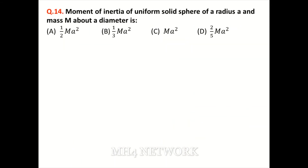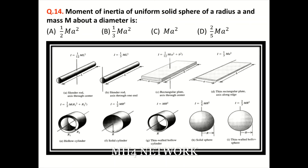Moment of inertia of a uniform solid sphere of radius A and mass M about a diameter — yeh numerical solve bhi kar sakte hain, lekin behtar hai yeh table yaad kar lein kyunki PPSC papers mein kisi bhi shape ka moment of inertia poocha ja sakta hai. Table mein: rod (axis through center) = (1/12)ML², rod (end) = (1/3)ML², rectangular plane = (1/12)M(width²+depth²). Solid sphere ke liye yeh value 2/5 MR² hai — radius A hai to option D is the correct answer.